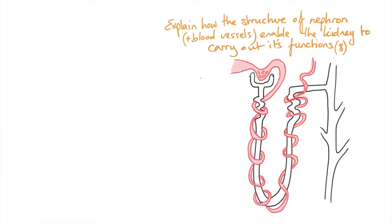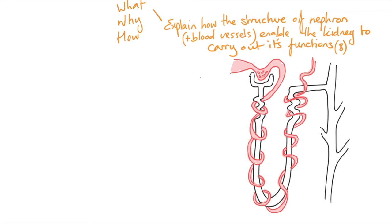So this is 11.3 and we're looking at the most in-depth question you're going to get on the kidney. Explain how the structure of the nephron and the associated blood vessels enable the kidney to carry out all of its functions for eight marks.